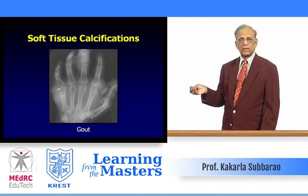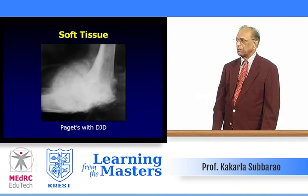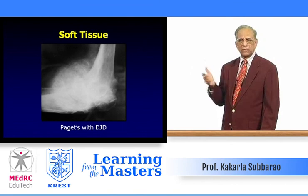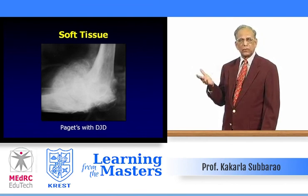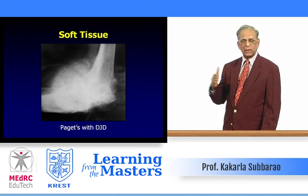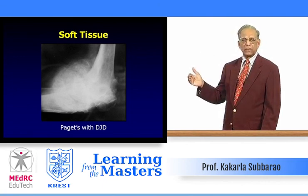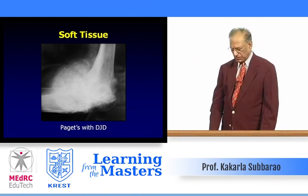Monosodium urate crystals calcify and produce tophi. In Paget's disease — occasionally and not uncommonly — the disorder extends to the articular margin, and pagetoid tissue may extend to the soft tissues, occasionally producing soft tissue calcification as well.